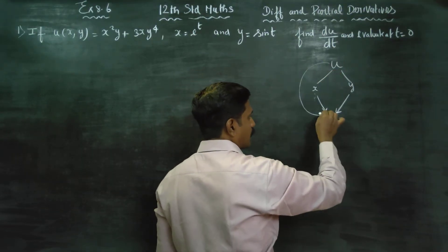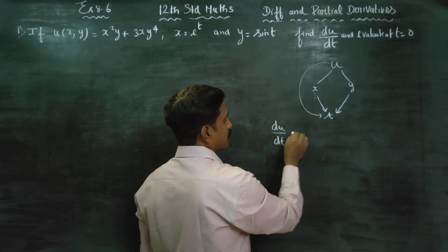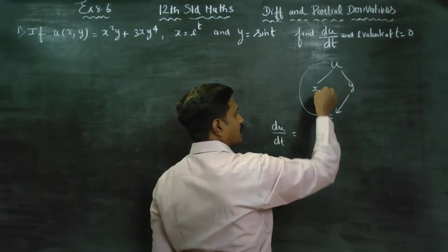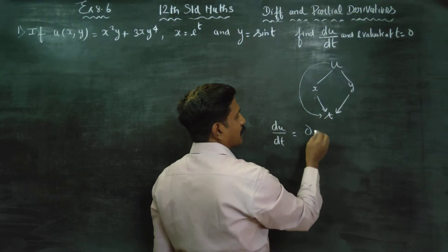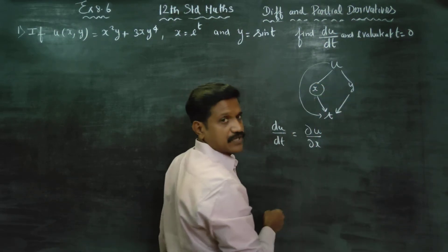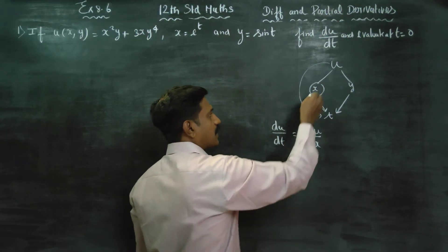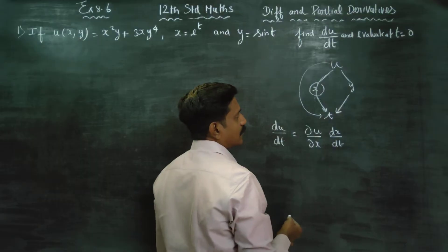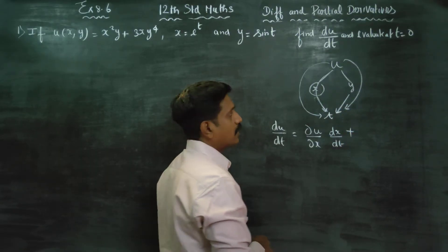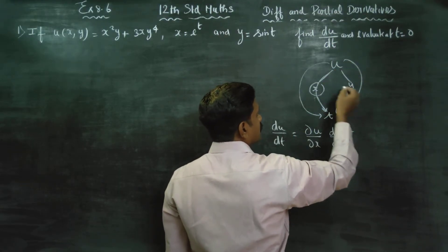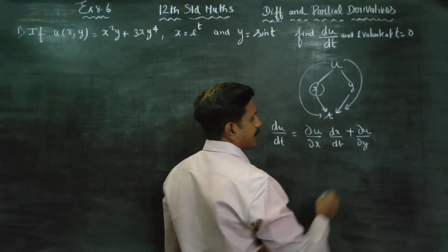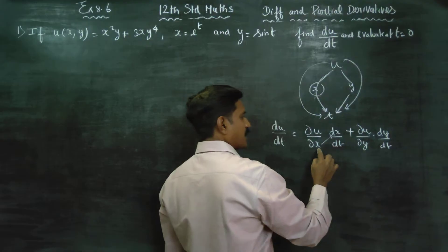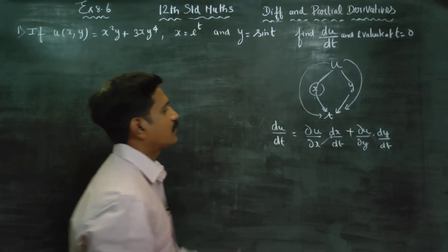To reach du/dt, the only channel is to proceed through x and y. It is partial because x and y are separate: du/dt = (∂u/∂x)(dx/dt) + (∂u/∂y)(dy/dt). Here x and y are two separate variables, so we use partial differentiation. This is the chain rule formula involved in this sum.